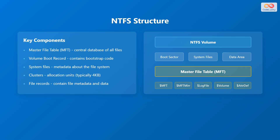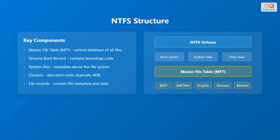An NTFS volume consists of key components: the Master File Table (MFT), which is the central database of all files; the Volume Boot Record, which contains bootstrap code; system files containing metadata about the file system; clusters as allocation units, typically 4 kilobytes in size; and file records containing file metadata and data. An NTFS volume is made up of a boot sector, system files, and a data area.